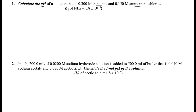NH4Cl is a soluble salt. When it dissociates in aqueous solution, you get NH4+ (ammonium), which is the conjugate acid, and chloride. Chloride is just a spectator, as we discussed before, so you don't want to include spectator ions in your chemistry. Since I'm given the Kb, let's write the reaction that deals with this Kb.